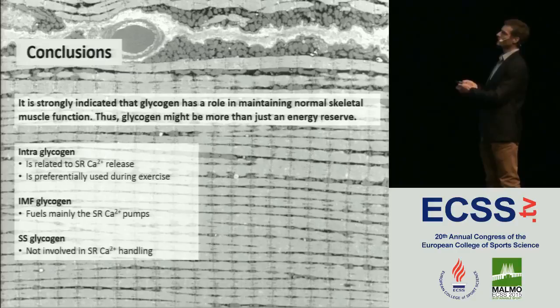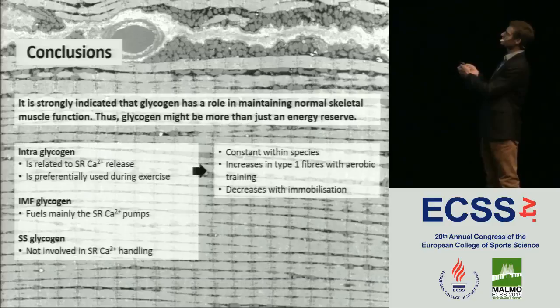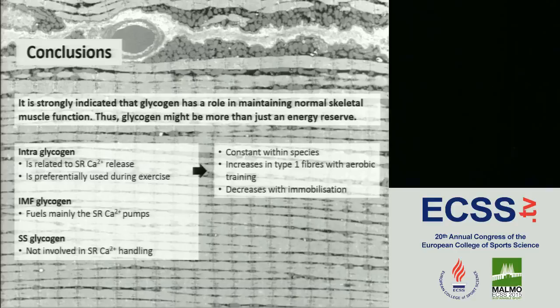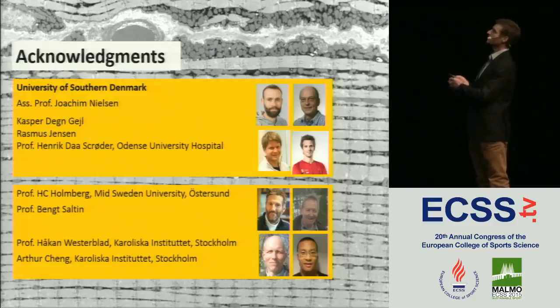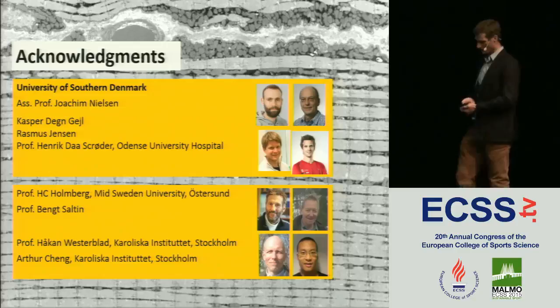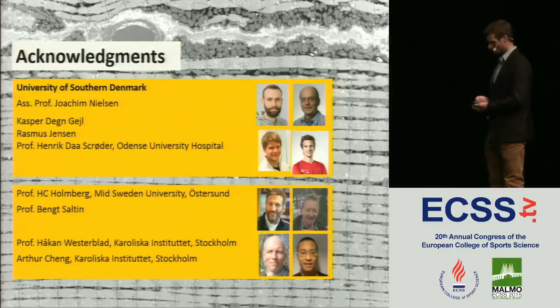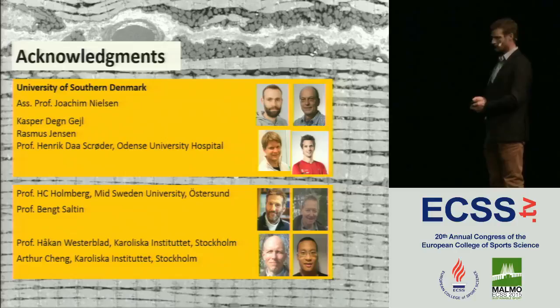In summary, skeletal muscle EC coupling starts with an action potential, cytosolic titanic calcium levels increase, and then you have force production. Using different experimental levels — SR vesicles, mechanically skinned fibers, intact fibers, whole muscle, or whole body — we can show that low glycogen affects multiple steps: the sodium-potassium pump, SR calcium release rate, intracellular titanic calcium, and ultimately endurance and force production. We know by training that intermyofibrillar glycogen actually increases in type 1 fibers in endurance-trained persons, and from immobilization studies that it decreases preferentially in the intermyofibrillar region. In conclusion, it is strongly indicated that glycogen has a role in maintaining normal skeletal muscle function and may be more than just an energy reserve — it also regulates steps in EC coupling. I'd like to thank Joachim Nielsen for the EM imaging work, and colleagues from Mid Sweden University and the Karolinska Institute. Thank you for your attention.